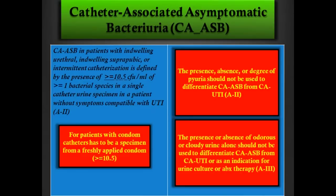All these patients have leukocytes on urinalysis, so the presence, absence, or degree of pyuria should not be used to differentiate asymptomatic bacteriuria from UTI. Also, the presence or absence of foul-smelling or cloudy urine alone is not used to differentiate asymptomatic bacteriuria from UTI, or as an indication for urine culture or antibiotic therapy. We are treating a lot of patients for asymptomatic bacteriuria worldwide — the collateral damage is really important.